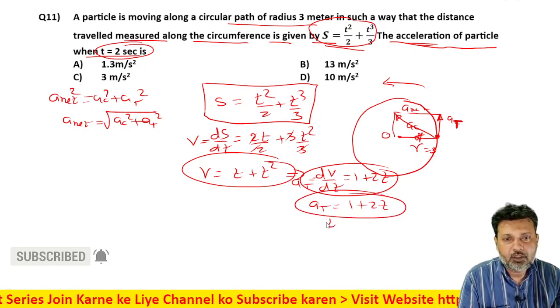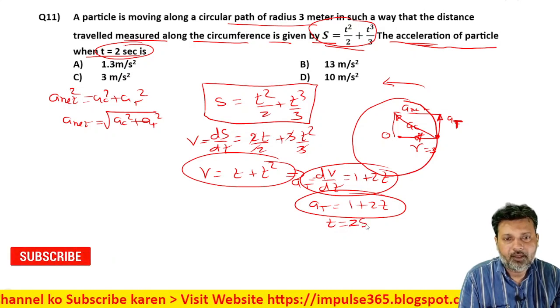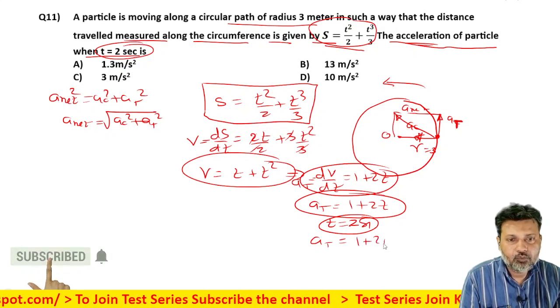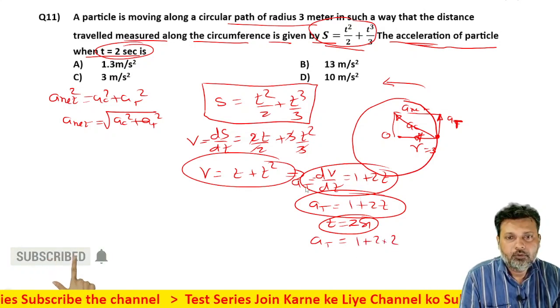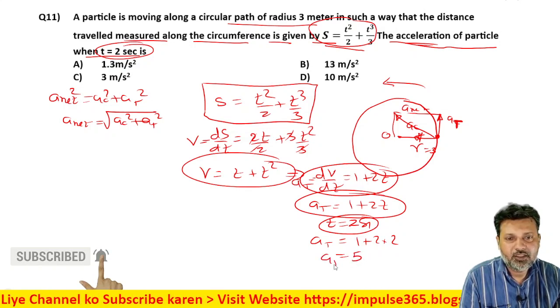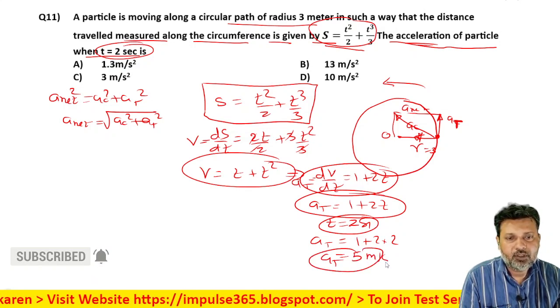Now pay attention. At t equals 2 seconds, what will be the acceleration? So at 2 seconds, let's first find tangential acceleration: one plus two into two. One plus two into two, how much will it be? Five. Tangential acceleration will be five meter per second square.